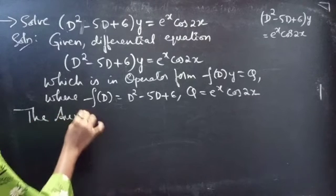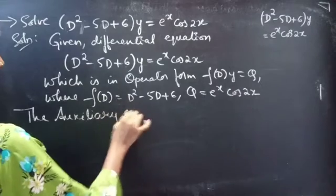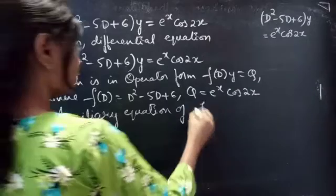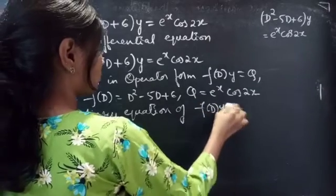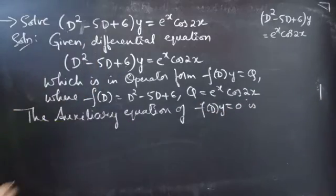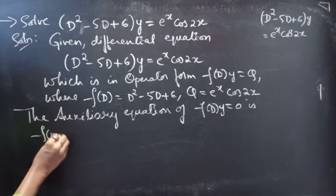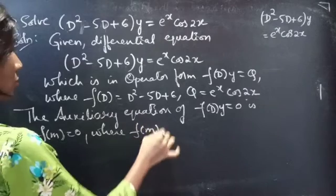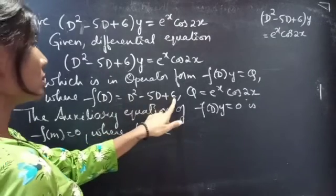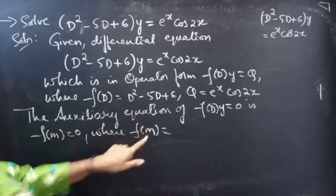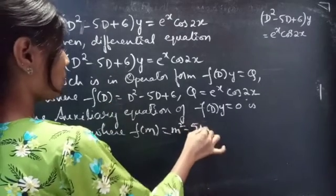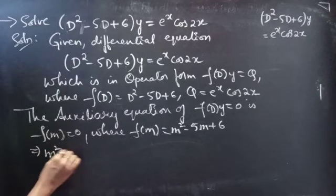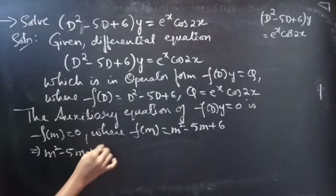We know that the auxiliary equation of f(D)·y = 0 is f(m) = 0. We have f(D) = D² - 5D + 6. Let's replace D by m, so f(m) = m² - 5m + 6. Then our auxiliary equation becomes m² - 5m + 6 = 0.